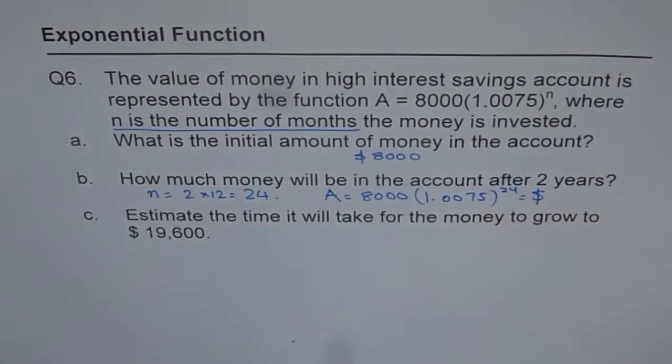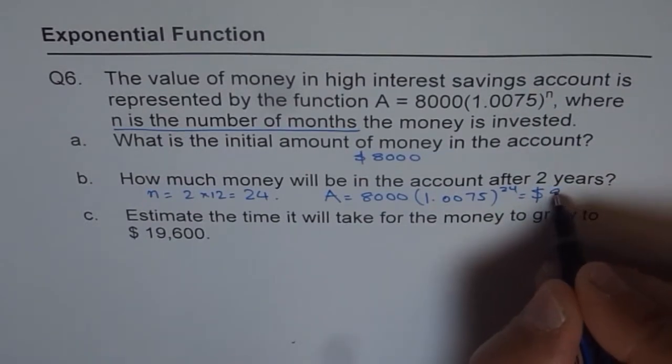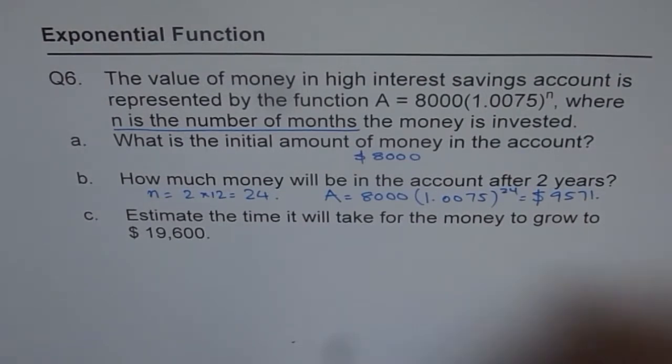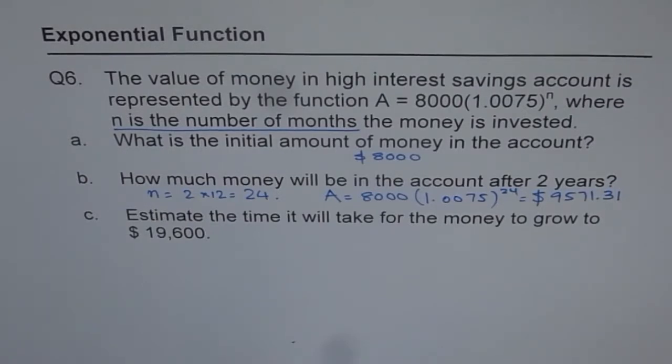So, you can calculate using the calculator and write down your answer. We have 8,000 within brackets 1.0075 bracket close to the power of exponent 24 equals 9571. Round your answer to 2 decimal places. We can say 9571.31. So, that is the amount which will be available after 2 years.